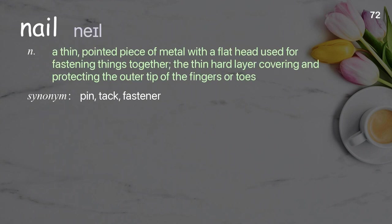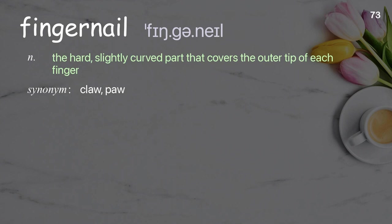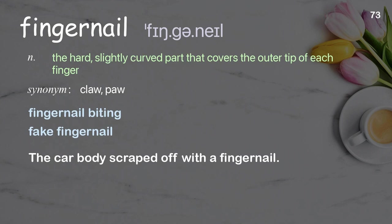Nail: a thin pointed piece of metal with a flat head used for fastening things together; the thin hard layer covering and protecting the outer tip of the fingers or toes. Examples: rusty nail, nail clipper. He used a hammer and round nail to fix the loose board on the fence. Fingernail: the hard, slightly curved part that covers the outer tip of each finger. Examples: fingernail biting, fake fingernail. The car body scraped off with a fingernail.